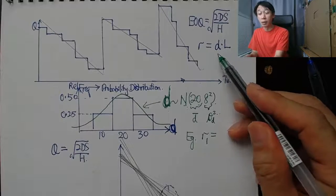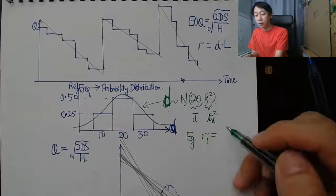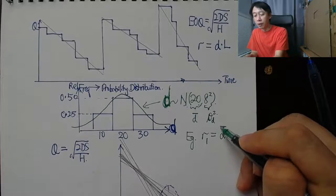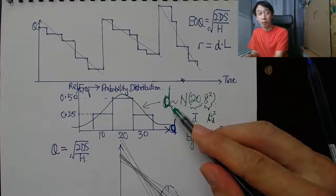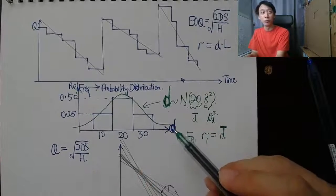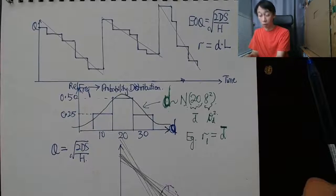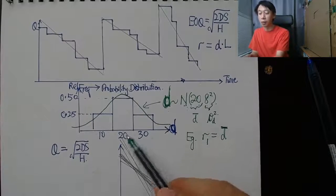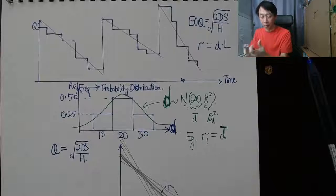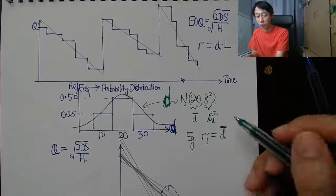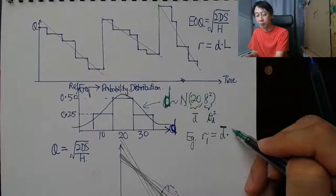We might say that R, one example of one possibility for our reorder point, is to, borrowing the EOQ with constant demand discussion, use the D bar as representative of D. Because D now is a curve, it has no fixed number, but we also typically use the mean to represent the curve whenever we need a single point of representation. So we use D bar times L.